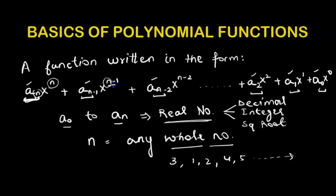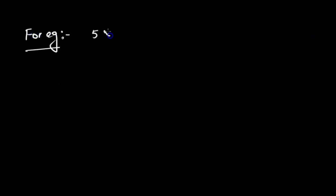The reason we write it as n, n-1, n-2 is that a polynomial function is arranged in decreasing order of the powers. These values n, n-1, n-2, 2, 1, 0 act as powers of x. The most important thing to remember is that these powers must always be whole numbers.